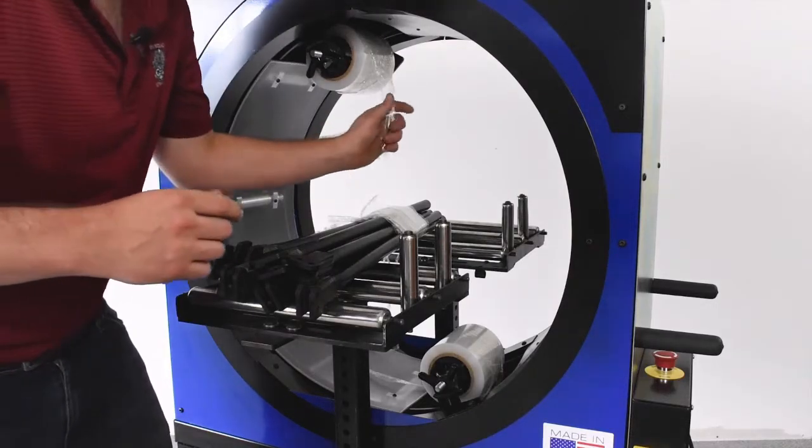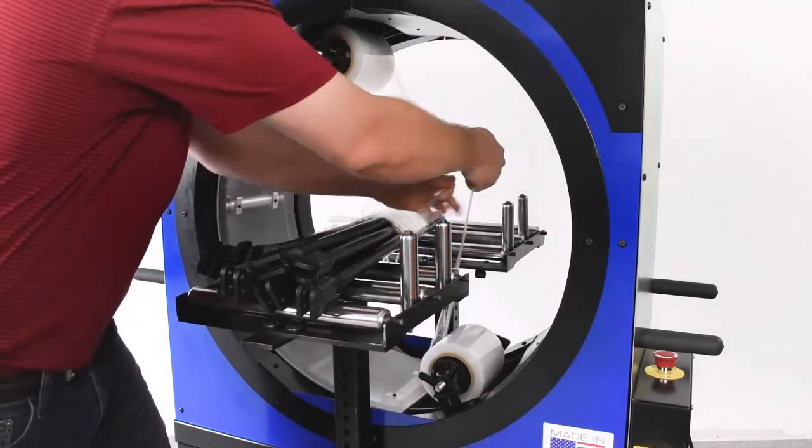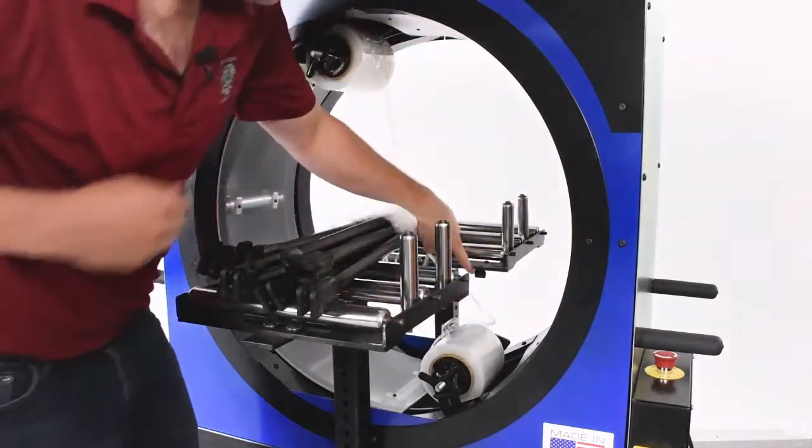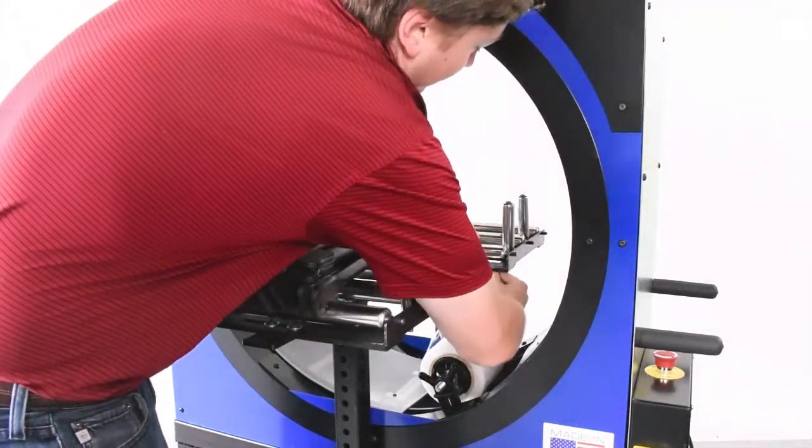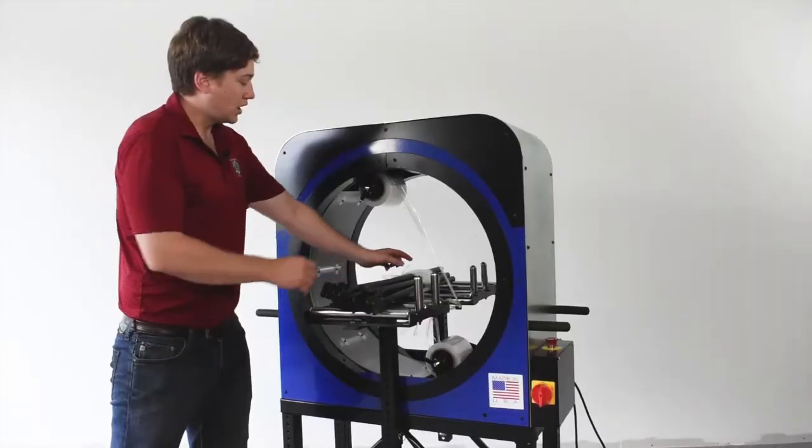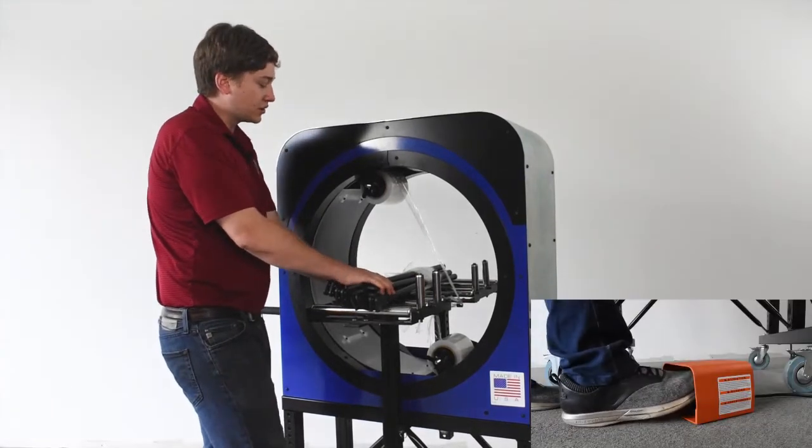First thing you want to do is take your bundling film, your two pieces here. Take them, there's a little clip you can see over here on this side, there's one on both sides as well, and just loop it around that clip real fast. Once you have your film secured, you engage the foot pedal to start the machine.